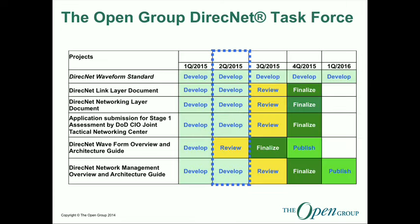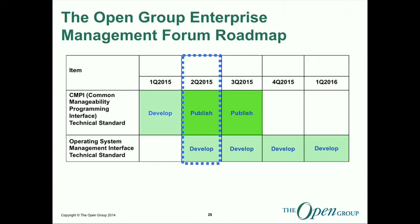Direct Net — not many people know about this. It's largely with the US Navy and is around things like waveform. Some of the things they're doing are quite exciting — the possibility of linking up every aeroplane in the sky as a node to create a mesh network. Kind of amazing.